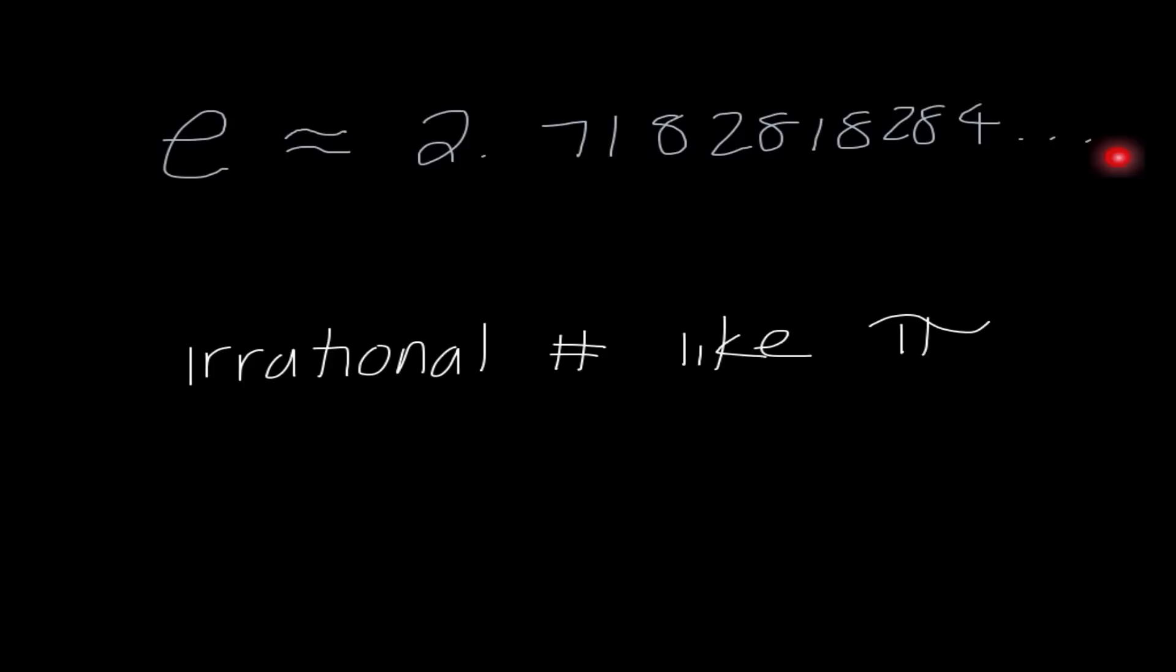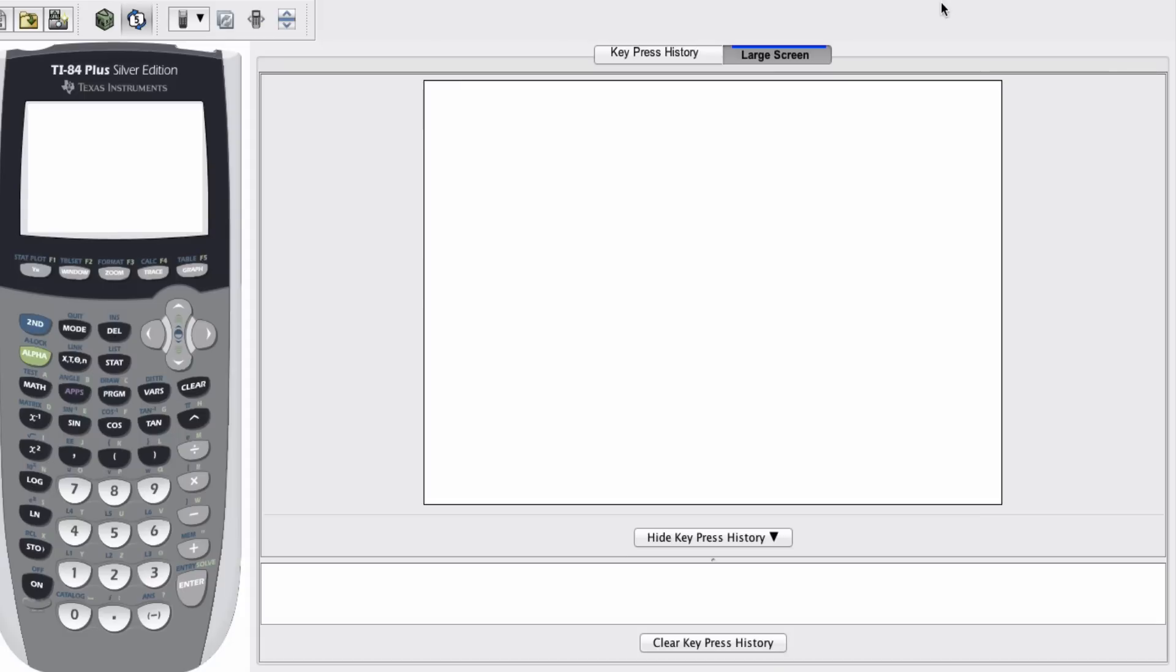So that's just a little background into the history of the number E and Euler. Now we're going to transition into our calculator and where we can see some of this stuff in our calculator. Okay, so now if you guys could go ahead and take out the note handout that goes along with this lecture, we're going to go through that together. And I thought it would be more beneficial to go through the graphing calculator portion and show you that.